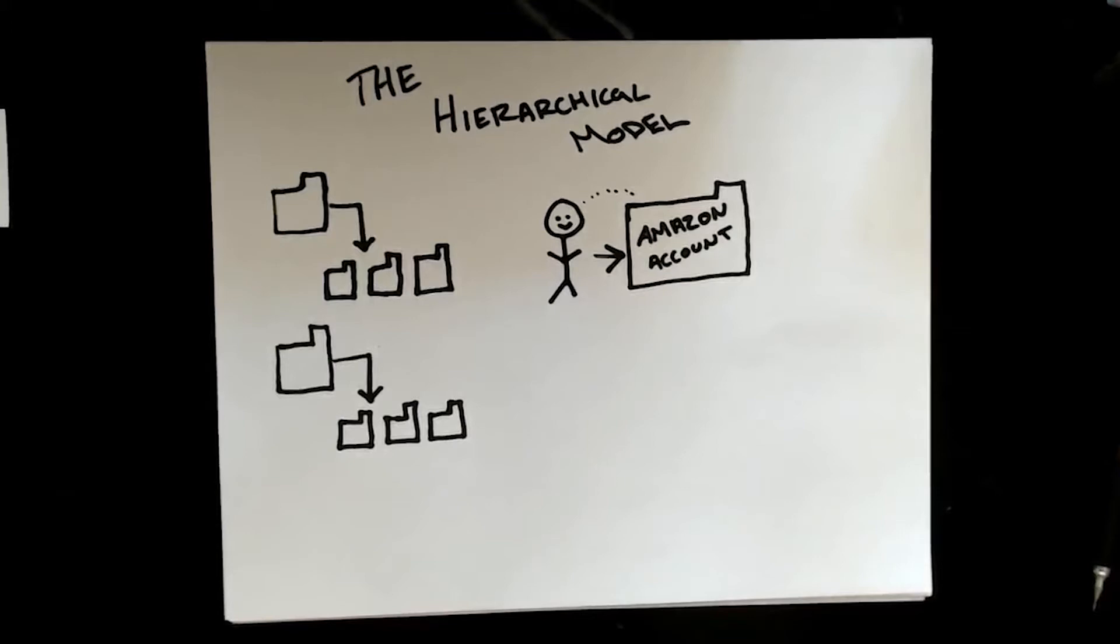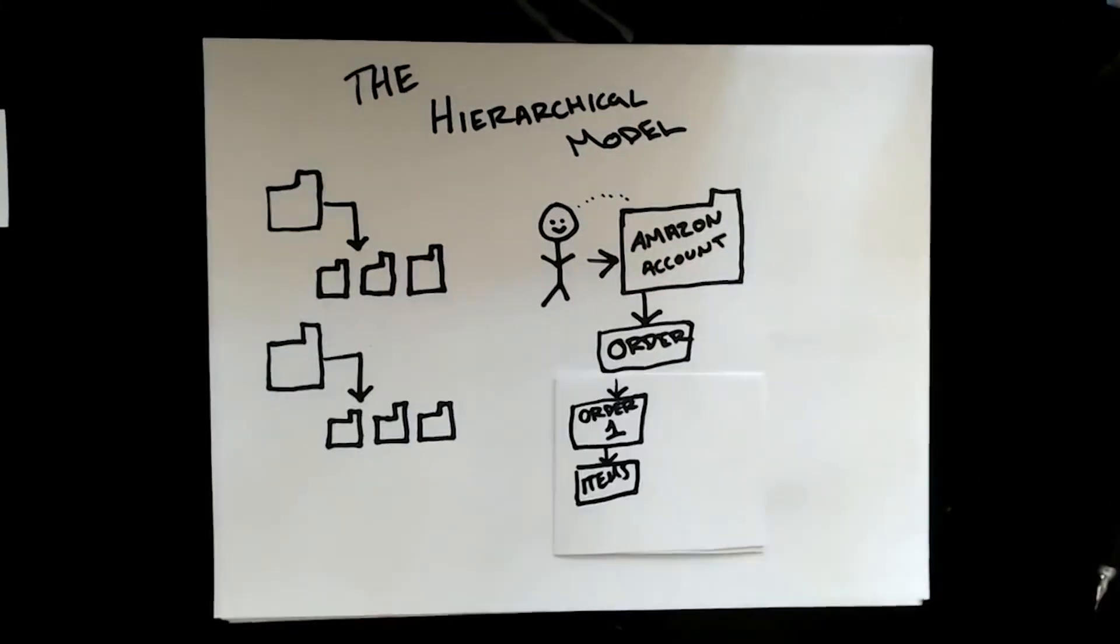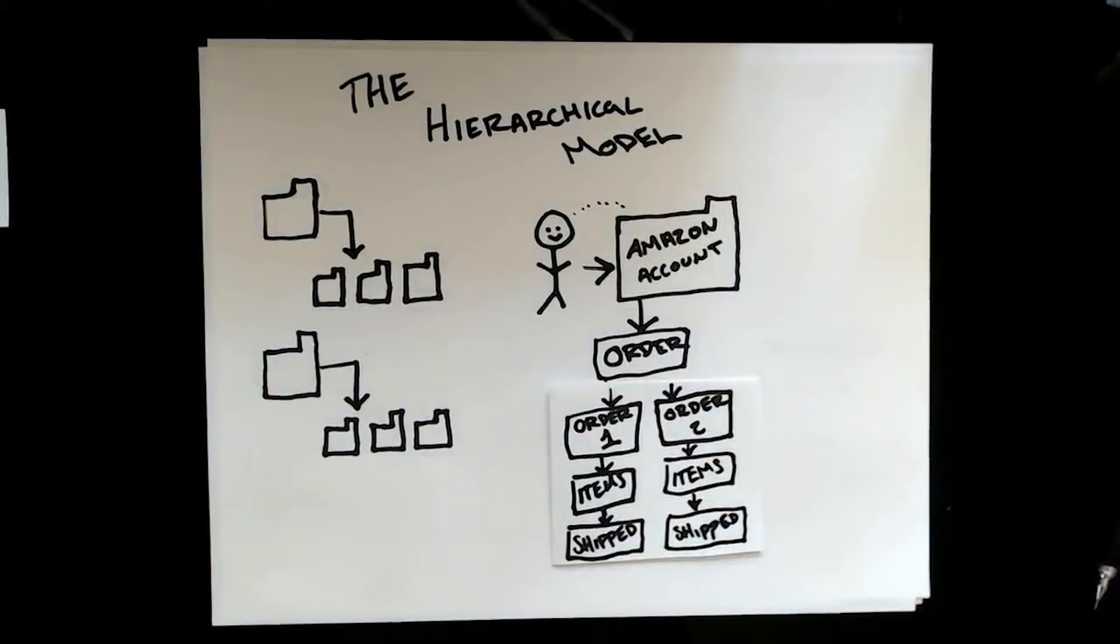When you go to place an order, that order can create a child folder. Purchasing items will fall under that order number and any other information related about that order. A second order also creates another child folder, with different items and different details.